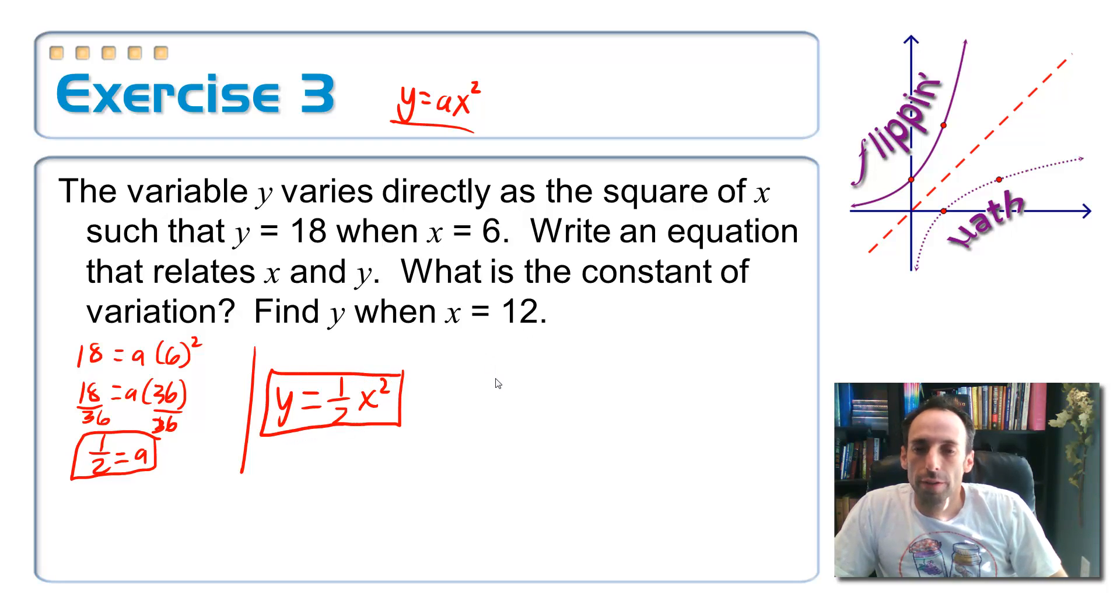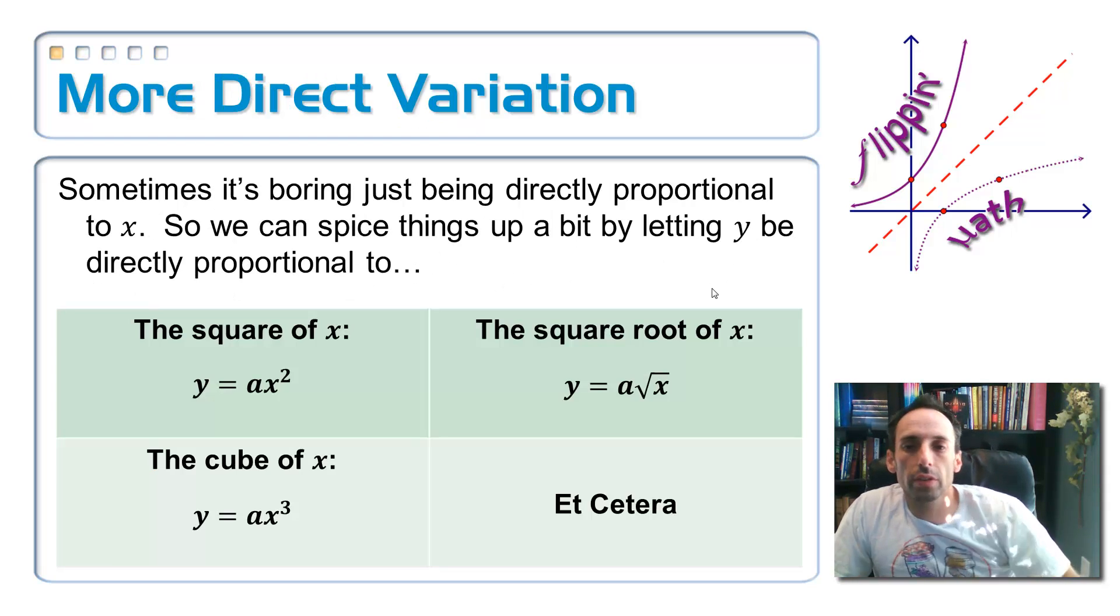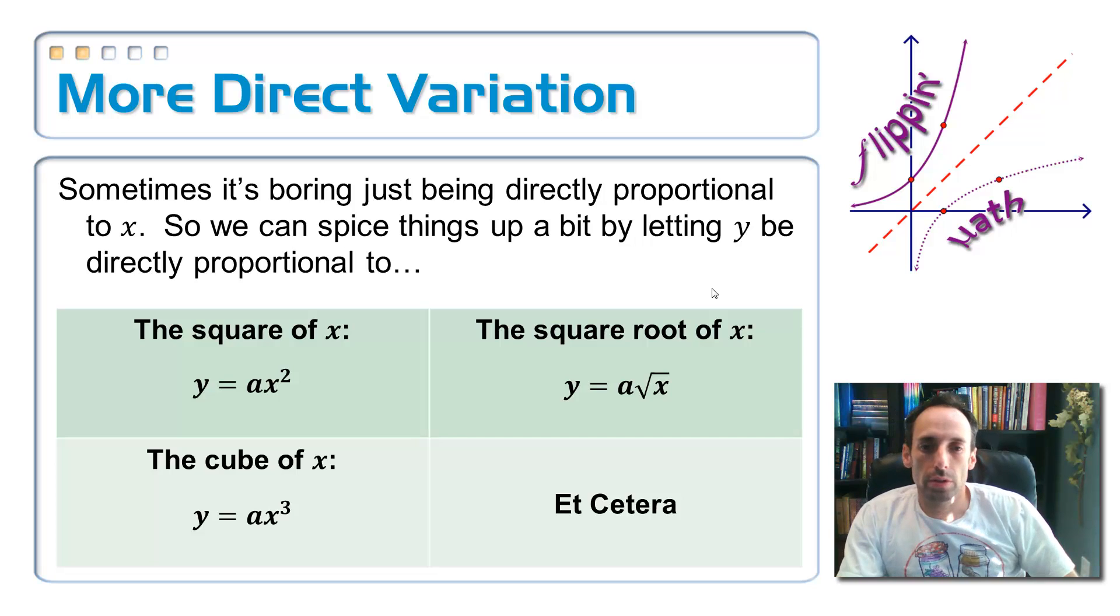Now, the follow-up question is, find y when x is equal to 12. So y equals a half times 12 squared. A half times 144 is 72. Ta-da! Okay. So it doesn't have to be just direct variation, plain old direct variation. It could be directly proportional or vary directly to the square of x, or anything else that you see in this table here. So the square of x is y equals a x squared. If it varies directly to the square root of x, y equals a times square root of x. The cube of x, y equals a times x cubed. You get the picture, right? So on and so forth.